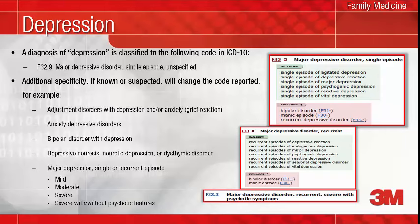According to published Medicare inpatient hospital data, the code for unspecified depression appears on one-fifth of hospital records covered by Medicare. We can do a better job of describing what we are treating, which will result in more accurate data to explain the treatment, use of resources, medications prescribed, and length of stay.